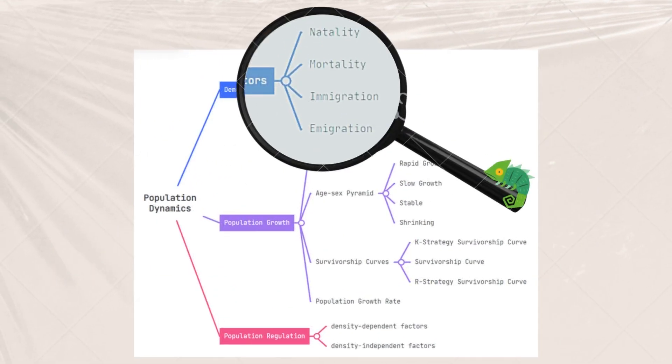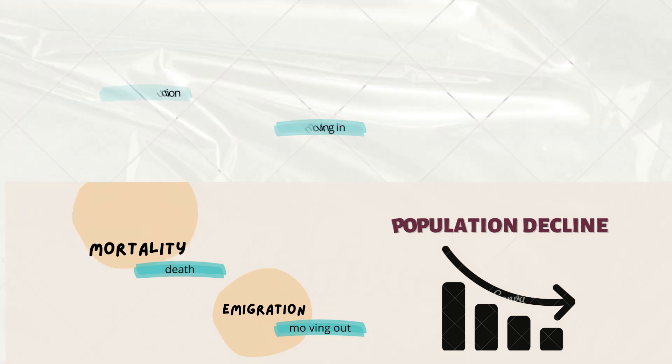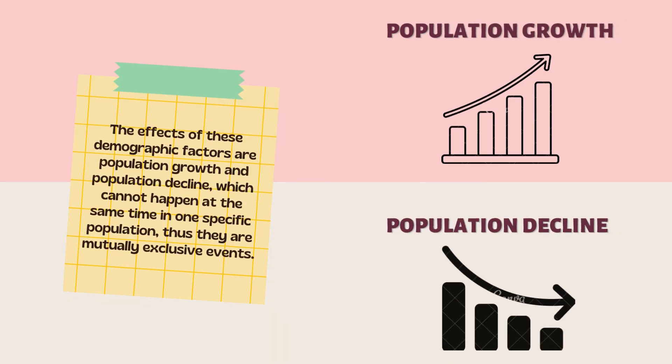These factors are natality, mortality, immigration, and emigration. Natality and immigration increase the population growth as they are related to reproduction and moving into a population, adding up the population totality. Whereas mortality and emigration result in population decline as they are related to deaths and moving out of the population. These factors themselves are not mutually exclusive to each other, but their effects are.